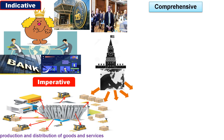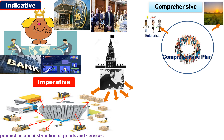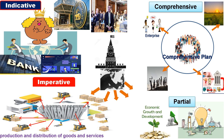Comprehensive planning covers all sectors — primary sector, secondary sector, and other sectors — for overall development. Partial planning is where only one sector is developed.